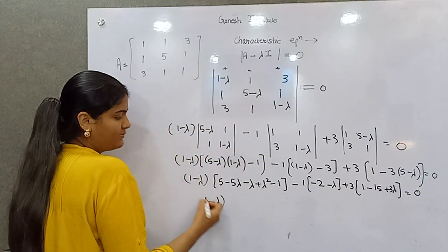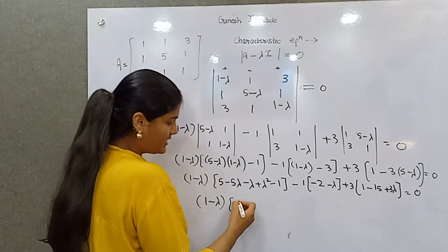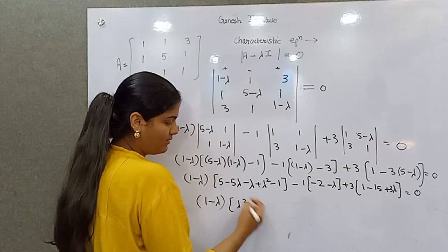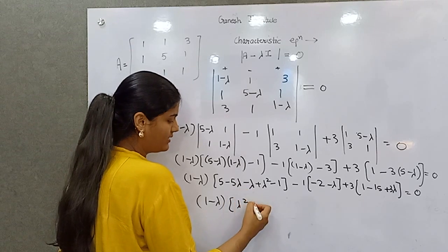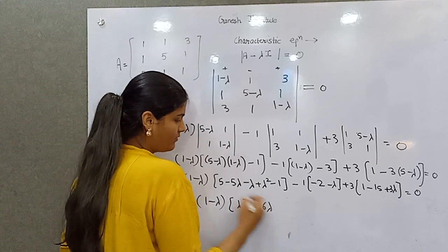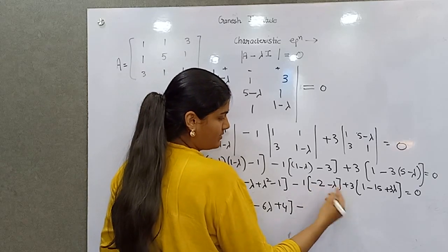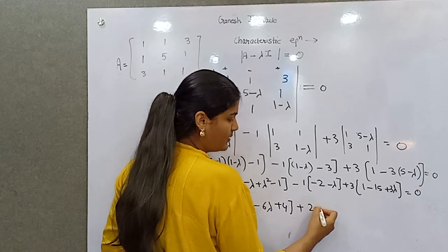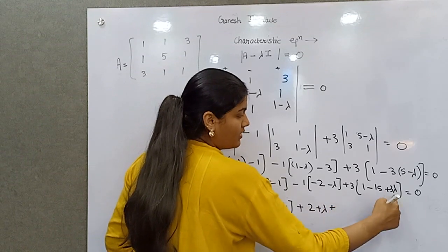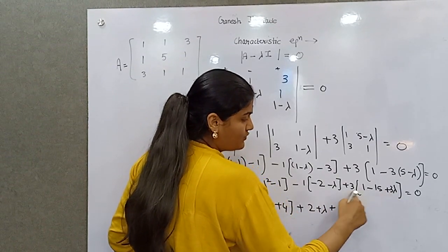So (1 minus lambda)(lambda squared), 5 and 1, 6... 5 minus 1 is 4. You can take minus common, then plus 2 plus lambda. 3 lambda into 3 is 9 lambda minus 14 times 3 is 42.